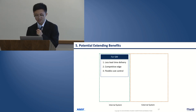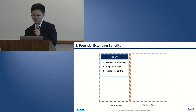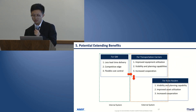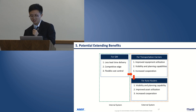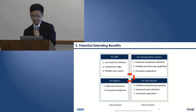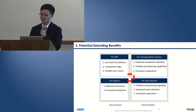We also consider some potential extending benefits that our model can give for different stakeholders in the whole vehicle delivery process. For GM, they can get less lead time, competitive edge, and flexible cost control. From GM to transportation carriers and auto haulers, they will get benefits like improved asset utilization and increased cooperation. And for dealers, they can have reduced inventories and increased satisfaction. All stakeholders in this delivery process can benefit if our model is further developed to meet their information needs.